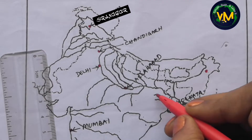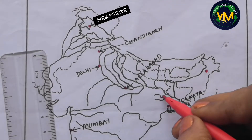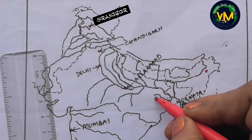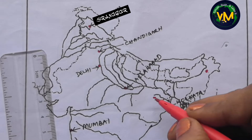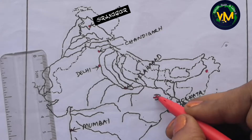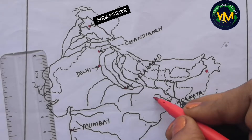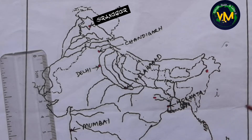Then we have a coal field — Jharia. Imagine this as the letter Y. This is River Damodar, so in the center of River Damodar between these two fork-like structures, this is Jharia.